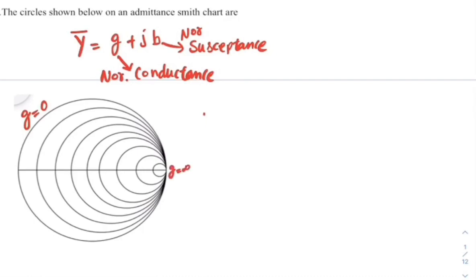Therefore, these circles are normalized conductance circles.